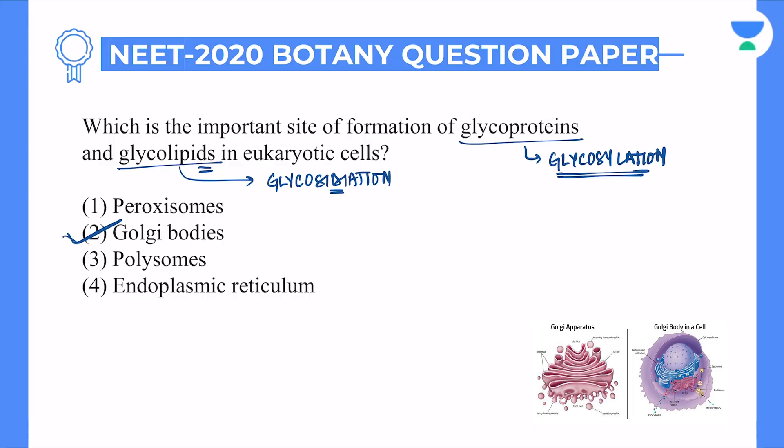So who will you choose? If you do not have Golgi in the options, you will take the answer that is endoplasmic reticulum, because it is the endomembrane system. But in this question, because we have Golgi bodies mentioned, modification of protein and lipid is the simple function of Golgi bodies. Answer will be option number two.